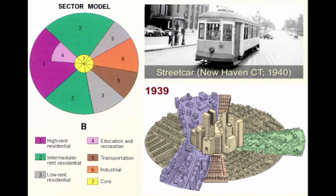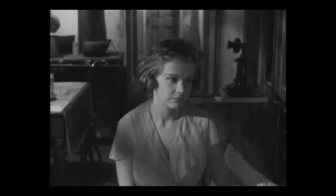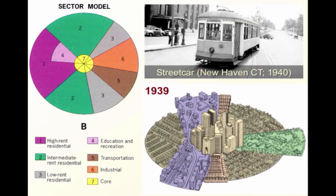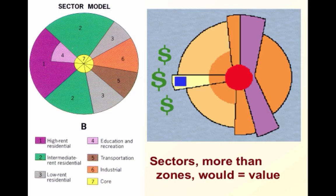What made this possible was the streetcar. Streetcars still exist in many parts around the world — they are self-powered, light rail vehicles, often powered by electricity. The reason why this created a pie-shaped sector model is because, just the same way as a subway today, whether you go two blocks, five blocks, or 20 blocks, you pay the same amount just to get on and move. This is why lower class, middle class, or even upper class residential areas could extend outward. And as opposed to the concentric zone model, if you were a real estate developer, understanding the sectors rather than just the zones would give you a better understanding of the actual value of the land.